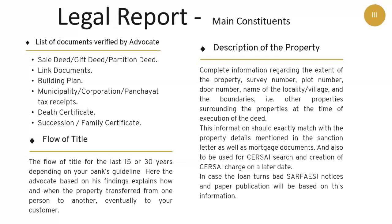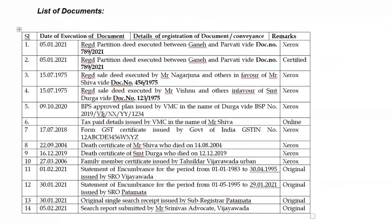The list of documents is the place where everything starts. These documents are verified by the advocate before giving his report. Once he submits the report, our first responsibility is to check whether these documents are submitted along with the report. If any of them are found missing, immediately take up the matter with the advocate.